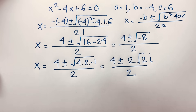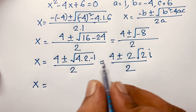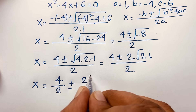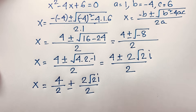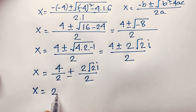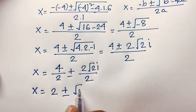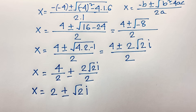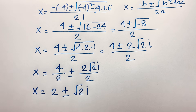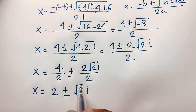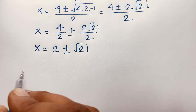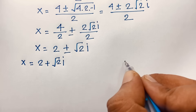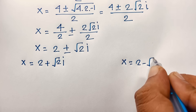It is a complex number. So x equals 4 over 2 plus or minus 2 square root 2i over 2, which simplifies to x equals 2 plus or minus square root 2i. There is no real solution — both are complex solutions. So x equals 2 plus square root 2i, and x equals 2 minus square root 2i.